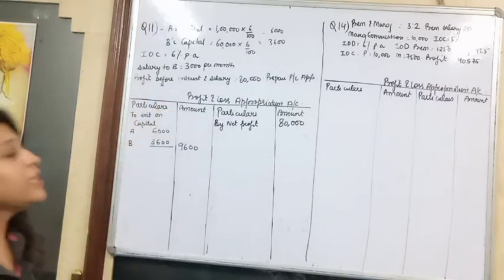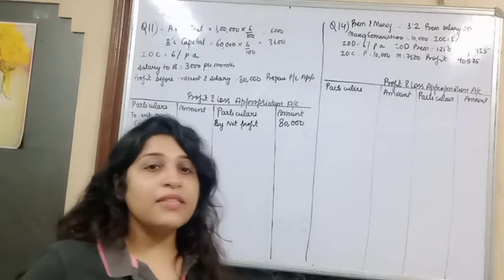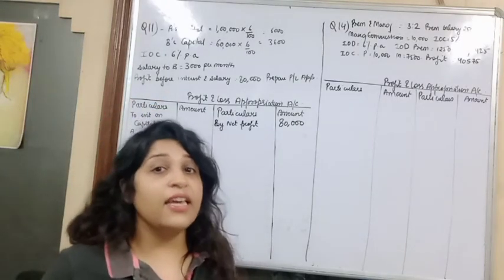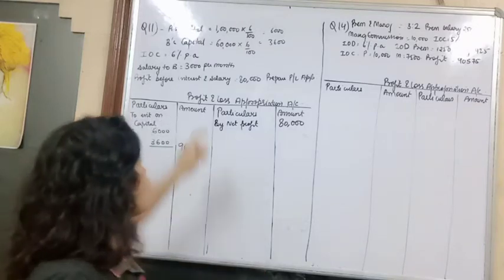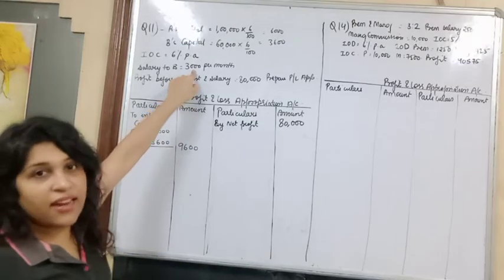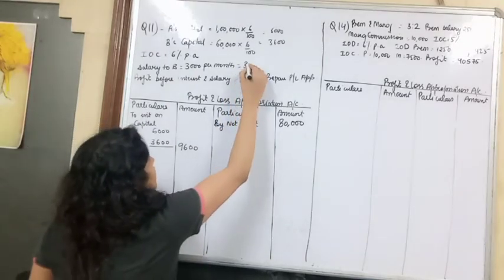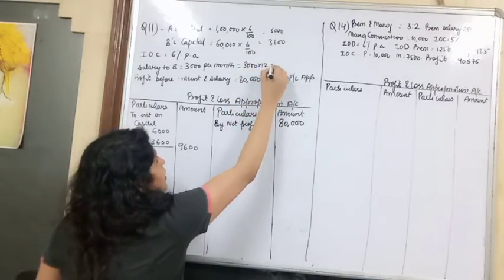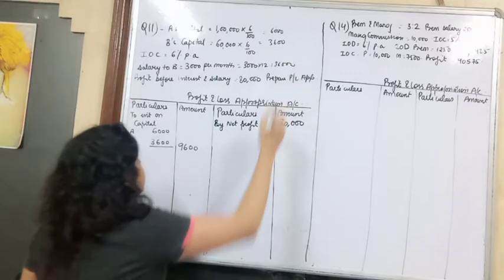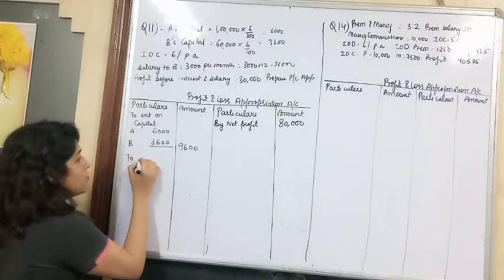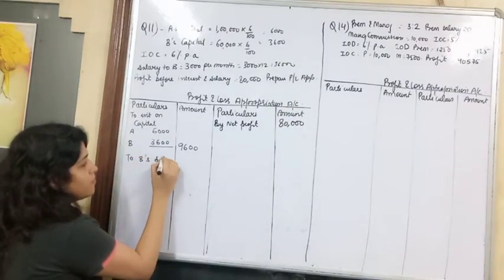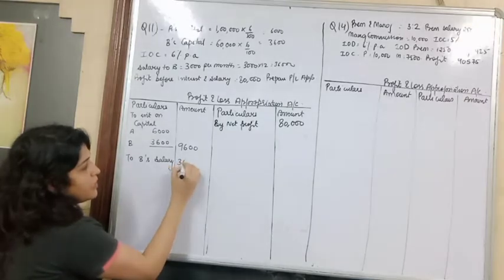Then, salary is 3,000 per month. We don't write monthly transactions, we write yearly. So if one month's salary is 3,000, there are 12 months in a year. So we'll multiply this - 3,000 into 12, which comes to 36,000. So salary is 36,000.